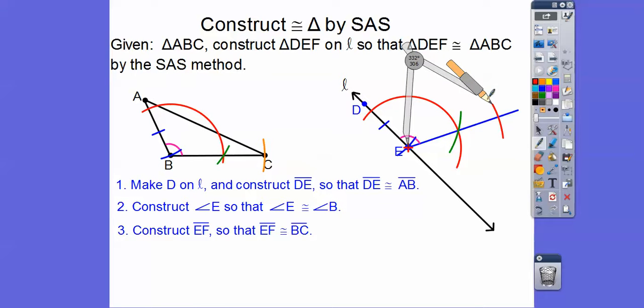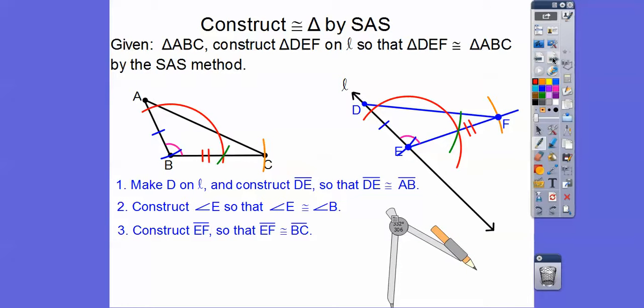So there's our length BC, so there's F right there. Let me move this out of the way. So now there's F, and we connect those points up right there, and so now we have side, angle, side. Over here we have side, angle, side, so those triangles are congruent by the side, angle, side method.